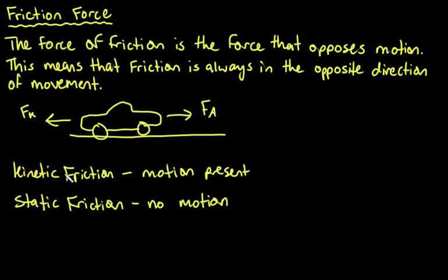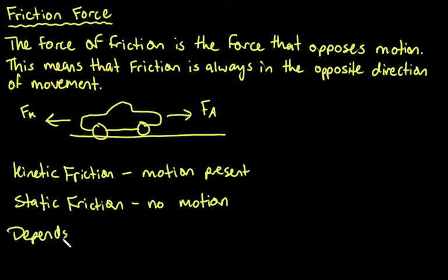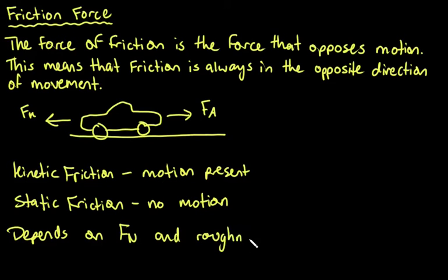So those are the two types of friction. When it comes to understanding what causes friction, friction actually depends on two things: the normal force and the roughness of the two surfaces.